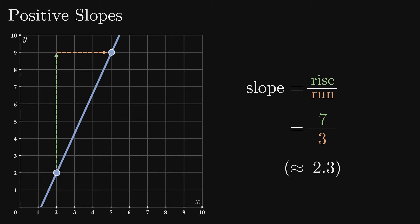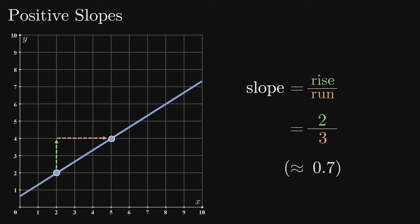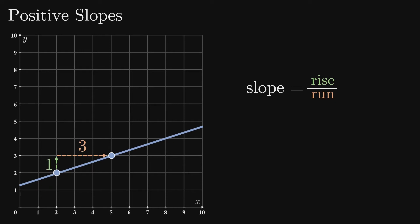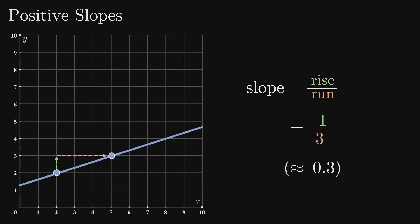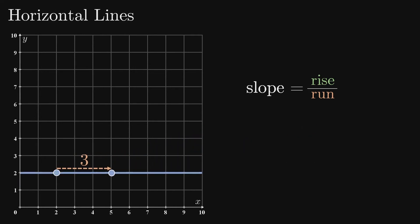As the rise becomes smaller relative to the run, the slope decreases. The closer that the rise is to zero, the closer the slope is to zero, and the closer the line is to horizontal. Horizontal lines actually have a rise of zero, which gives a slope value of zero.